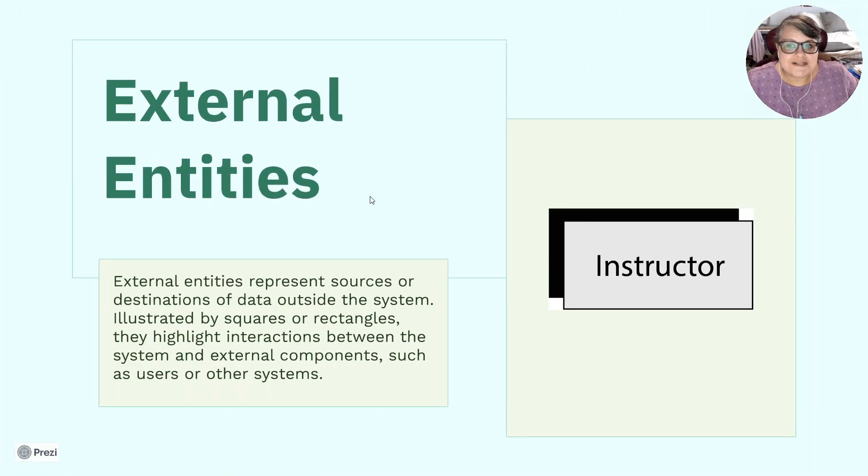External entities are just a rectangle. External entities represent sources or destinations of data outside the system. Illustrated by squares or rectangles, they highlight interactions between the system and external components such as users or other systems. If you can look at this one, you can see that it just has a rectangle, just a rectangle with a little drop shadow.